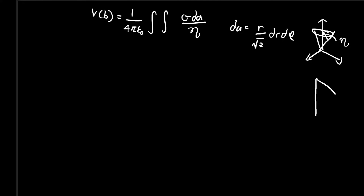We can use this diagram to help us find what η should be exactly. Let's enlarge the triangle we see here. So this is going to be point B, here is some point on the surface of the cone, this is the locked-in angle π/4, and this is the origin. The height of the cone is h. The radial variable is r, and as we move along the cone, r varies — and as it varies, η will also vary.